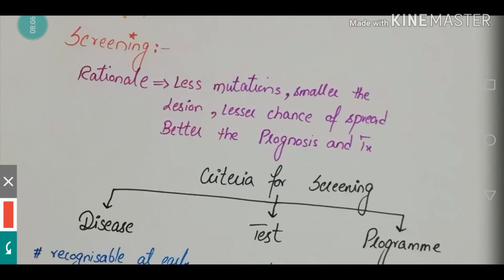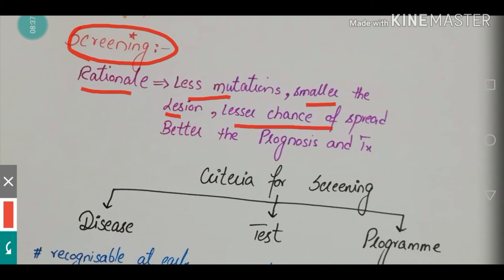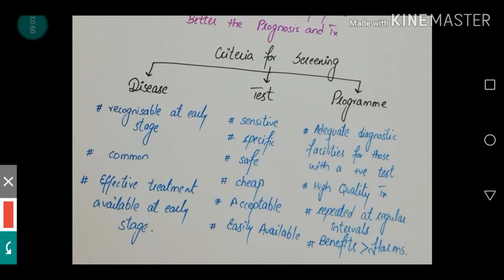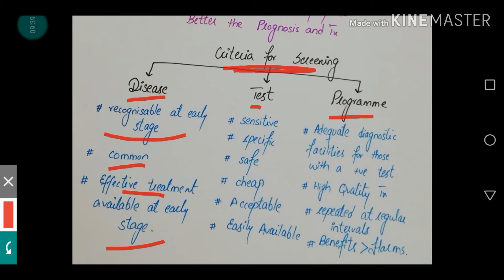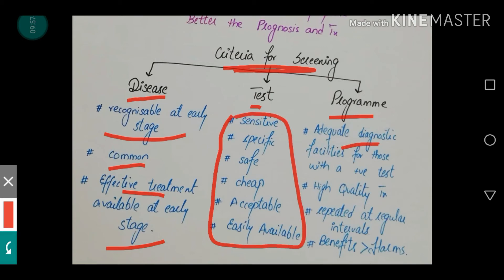Screening processes are very important so that we can identify patients who are liable to develop carcinoma later in life. The rationale for screening is that the less the mutation, the smaller the lesion, the lesser the chance of spread, and the better the prognosis and treatment. For screening to be performed, there are specific criteria: for the disease — it should be recognizable at an early stage, common in the community, and effective treatment should be available. For the test — it should be sensitive, specific, safe, cheap, acceptable, and easily available. For the program — there should be adequate diagnostic facilities, high-quality treatment available, it should be repeated at regular intervals, and benefits should outweigh harms.